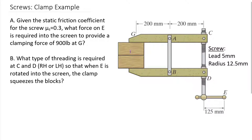We have a symmetrical geometry: 200 millimeters both from A to G and also from A back to the vertical screw arm. Everything is symmetrical top to bottom. We have an overall 125 millimeter radius from the centerline of the screw out to point E, where we apply force F — drawn as going into the page.